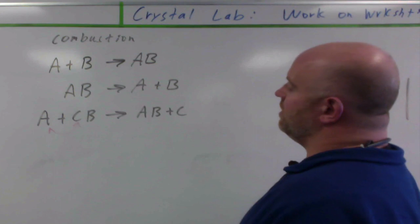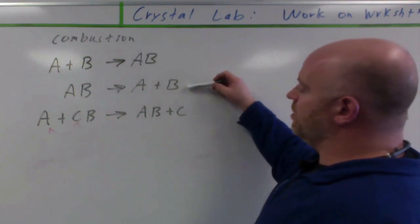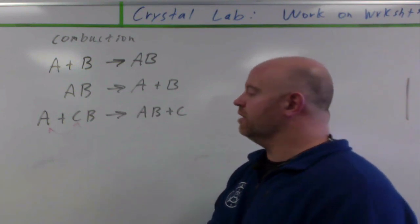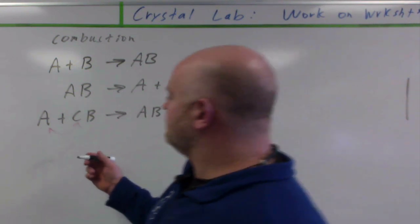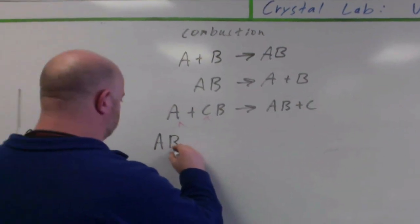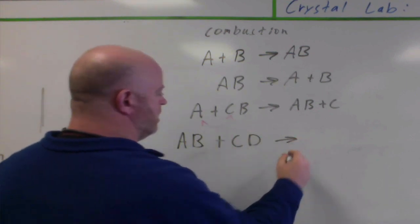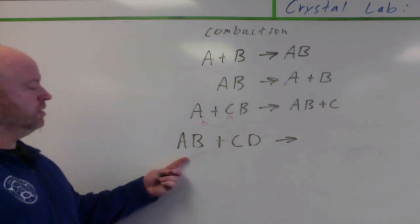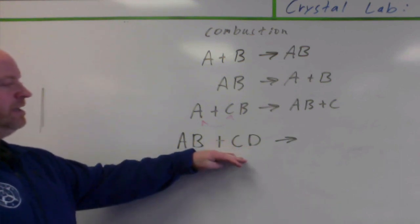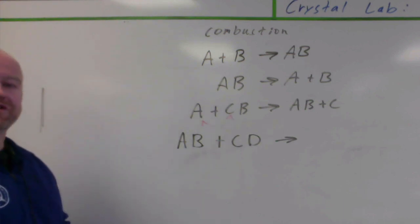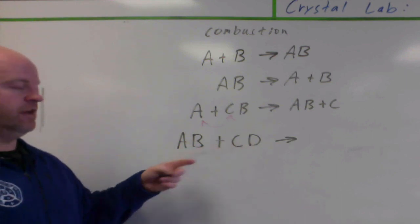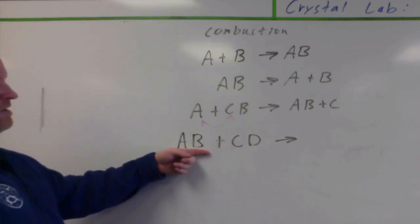So we've done: put them together, take them apart, switch partners. That's all we can do, right? Actually, there's one more. We haven't yet seen what would happen if we had two compounds. How do they interact with each other? So we have a compound plus a compound. The reality is, this reaction isn't any more challenging than single displacement. It actually does the exact same thing — it just looks a little different because there's an additional anion.